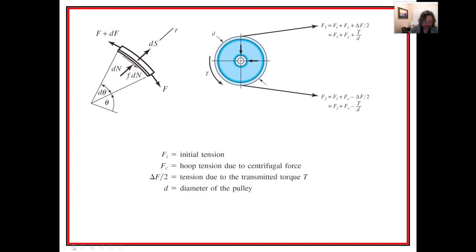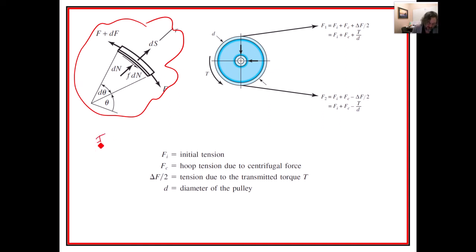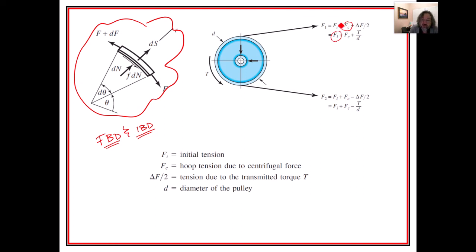For belt tension analysis, you always start with a free body diagram — actually two FBDs. Using an FBD and an IBD (Shigley's kind of glosses over this), you can find the centrifugal load, the tension in the belt due to centrifugal action — called Fc — and the initial tension Fi. The main torque equation gives delta-F equals two times the torque divided by the diameter.